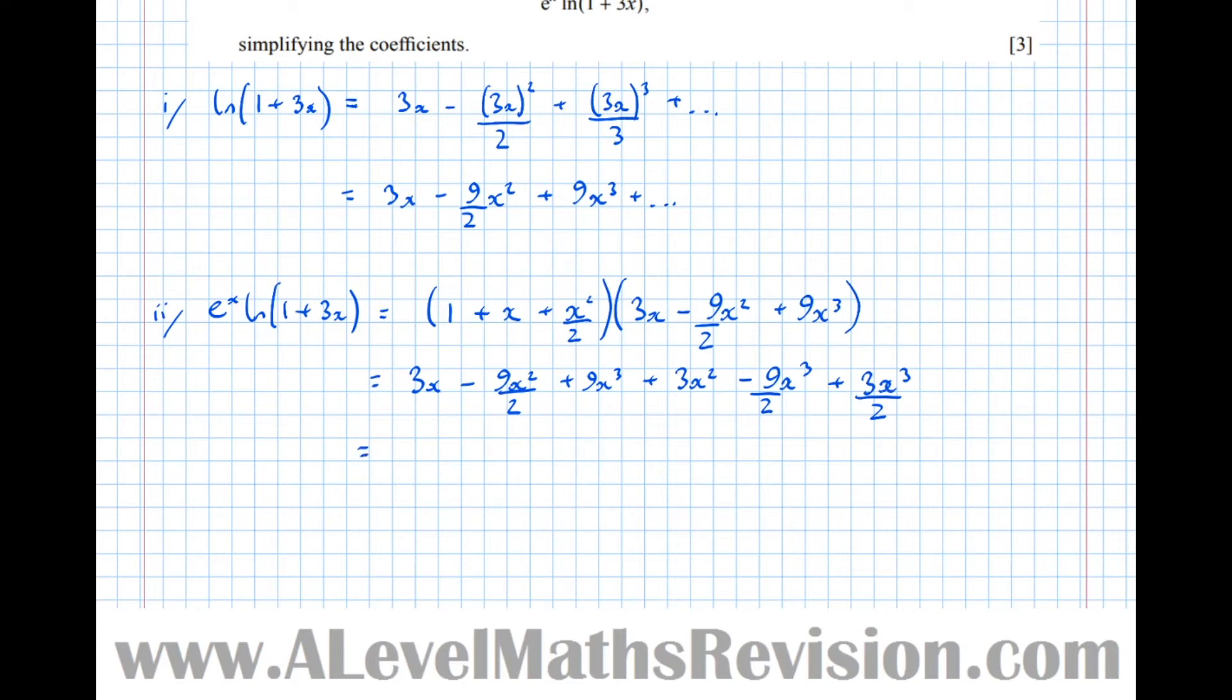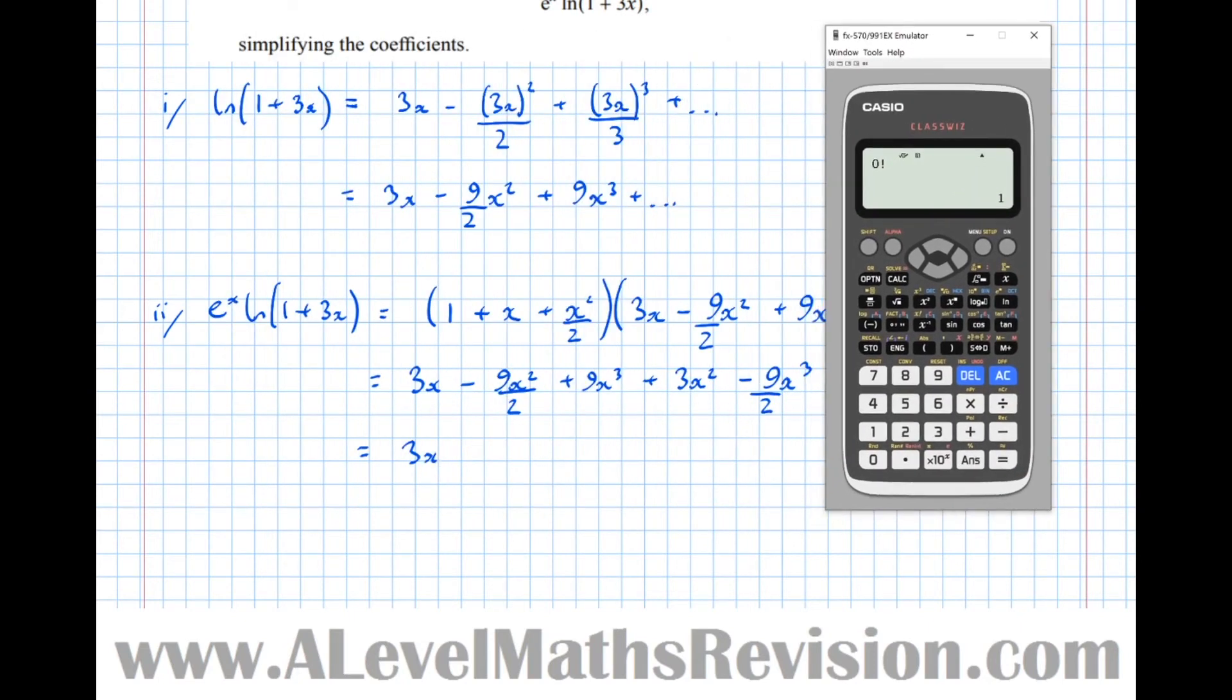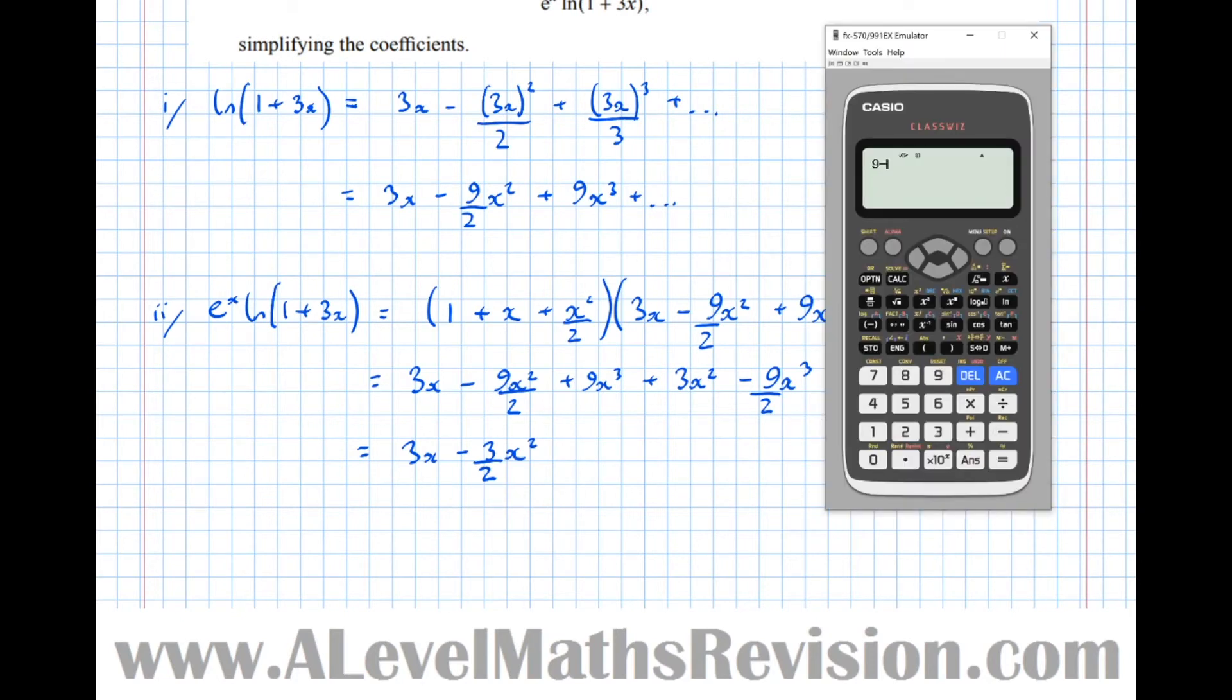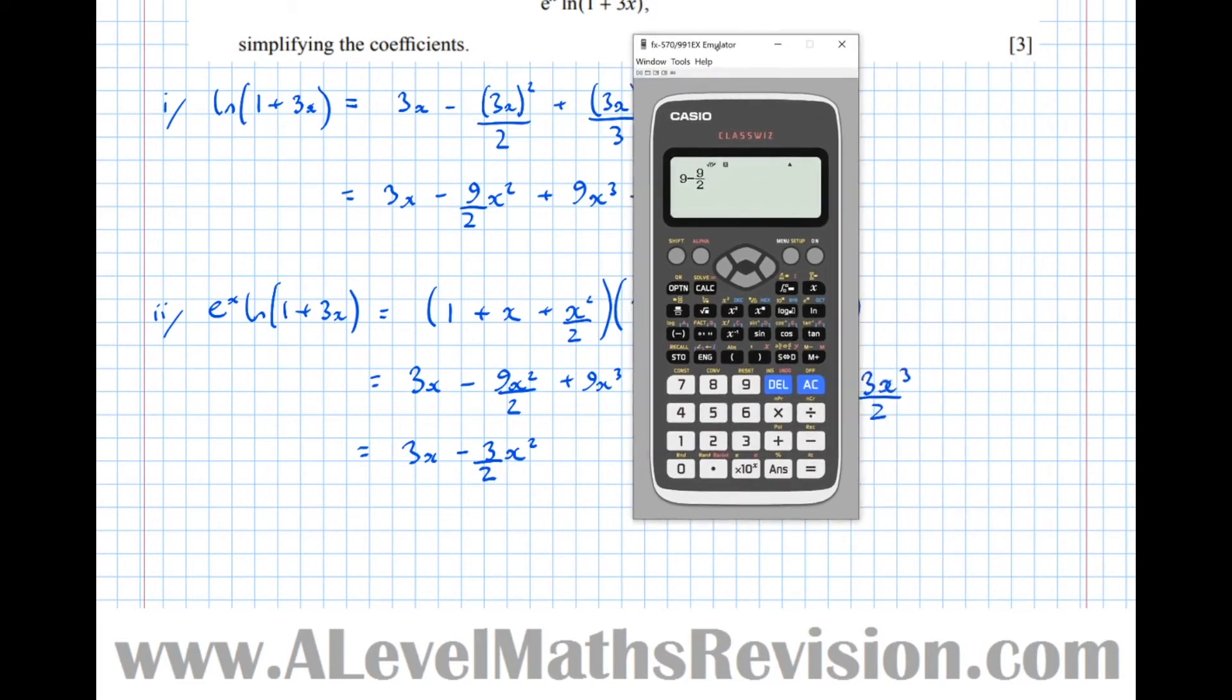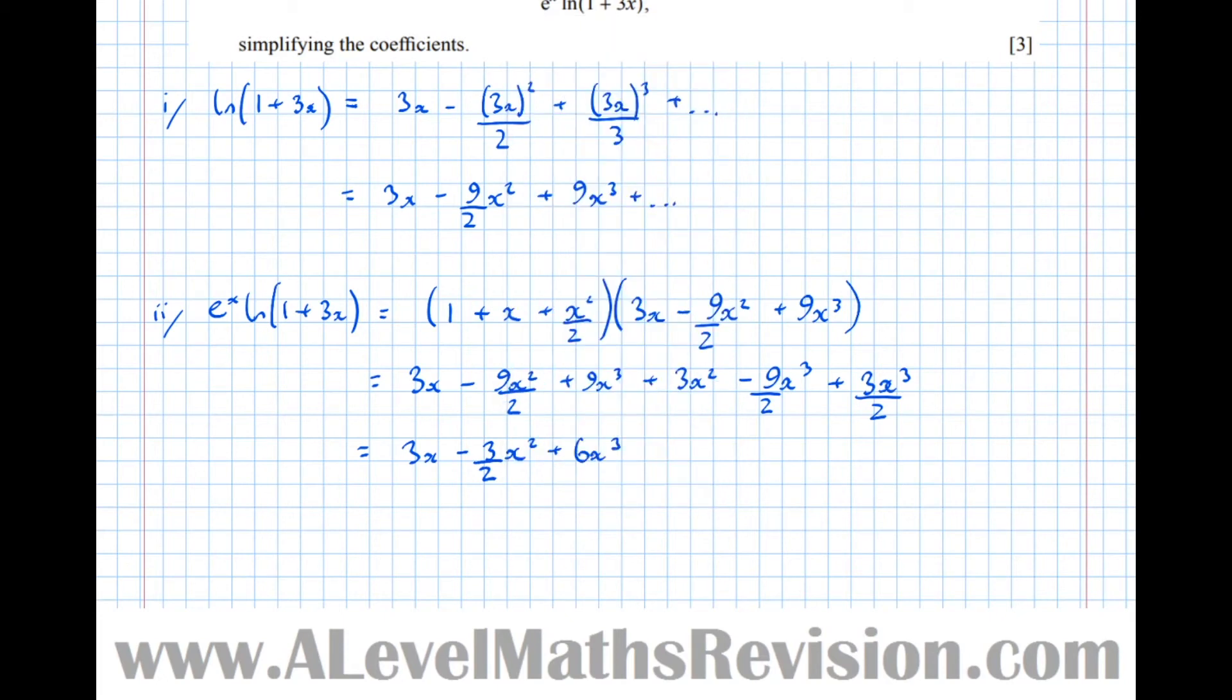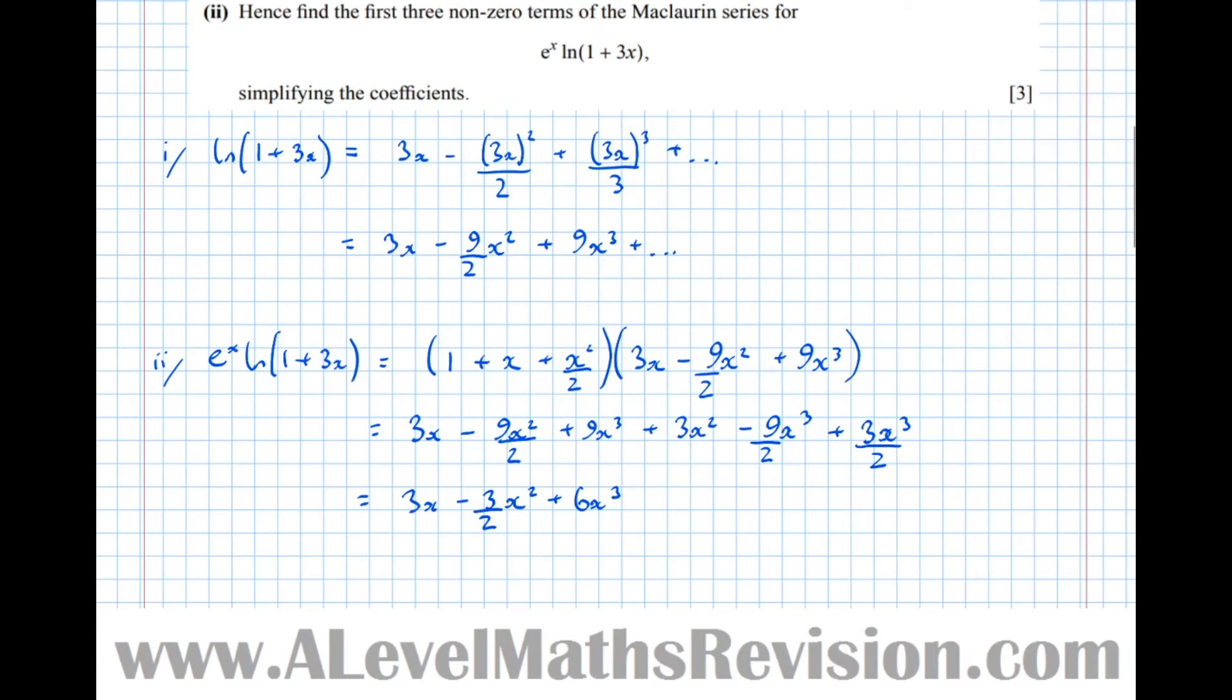So that becomes 3x. Now let's concentrate on the x squareds. We've got 3x squared take 9 over 2 x squared. Let's not leave anything to chance. 3 take 9 over 2 is minus 3 over 2. So minus 3 over 2 x squared. Then x cubed, we've got 9 take 9 over 2, obviously it is 9 over 2, then add on 3 over 2, equals 6. So plus 6x cubed. The question answered, let's box our answers now. As any good answer should. Sometimes I forget, but whenever you remember, you should put a box around your answers, make it obvious to the examiner what they're actually marking.